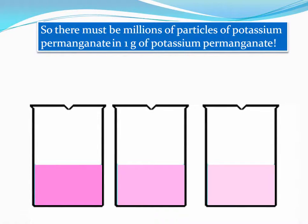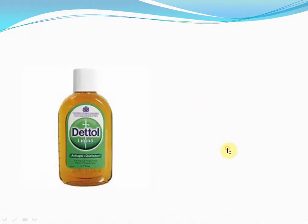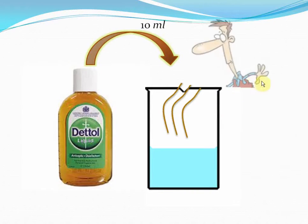To further clarify our concepts about how small the particles of matter are, let's consider a small example. We just proved that potassium permanganate consists of small particles. How can you similarly prove that the Dettol solution we commonly use in our homes also consists of small particles? Well, it's easy. Let's take a bottle of Dettol and add 10 milliliters of Dettol to pure water. When we do so, immediately that water solution gives that typical Dettol smell. As you can see, this cartoon man here can smell the Dettol solution.